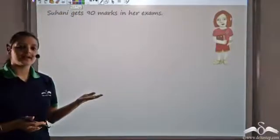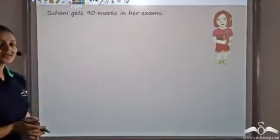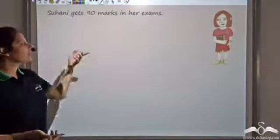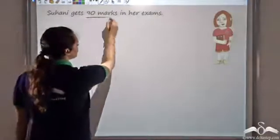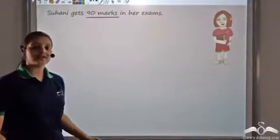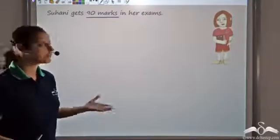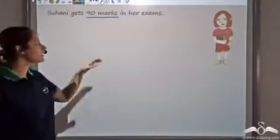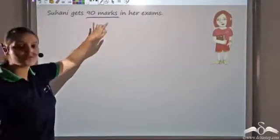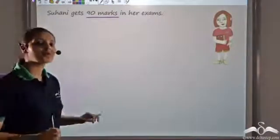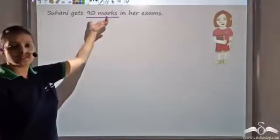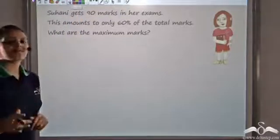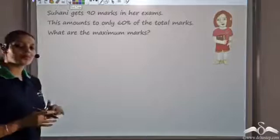Now if I tell you that Suhani gets 90 marks in her exams, what does it tell you? Can you say that she is very intelligent because she scored 90 marks? Well, note here that it just says she got 90 marks — it does not tell me 90 marks out of how many. This 90 could be out of 100, out of 150, out of 200, or 500. All we know is she scored 90 marks, but we do not know the total. Further, if she scores 90 marks but that accounts for only 60 percent of the total marks, can you tell me what the maximum marks would be?